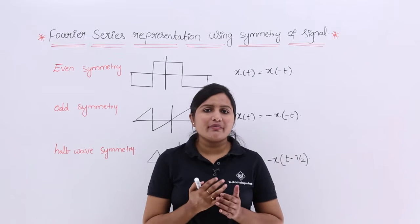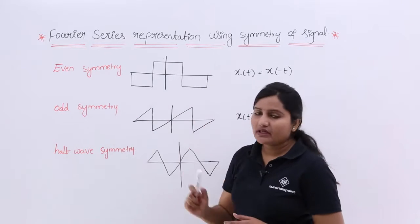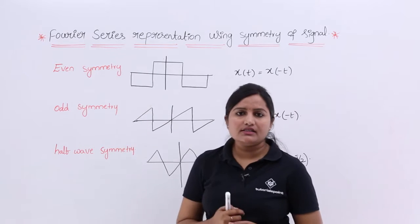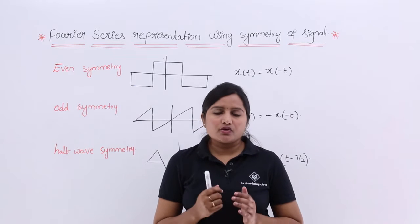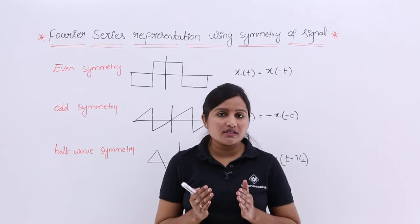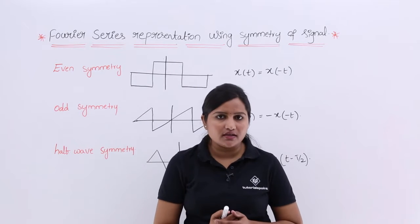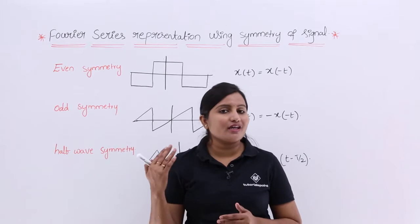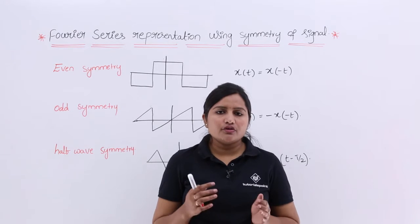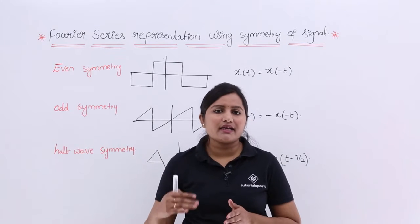In this video we are going to discuss symmetry of the signal. Symmetry here refers to even symmetry, odd symmetry, or half wave symmetry. Which symmetry the signal is satisfying is very important, because that affects the Fourier series representation. If you are given a signal to represent in Fourier series, first you need to check for symmetry. If you know which symmetry it satisfies, you can easily represent the Fourier series by neglecting some coefficients.